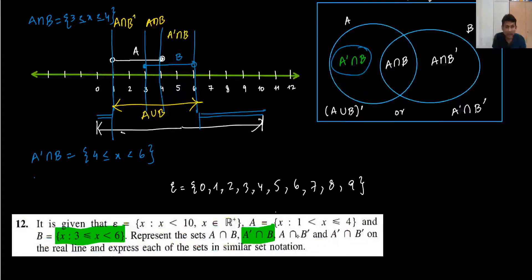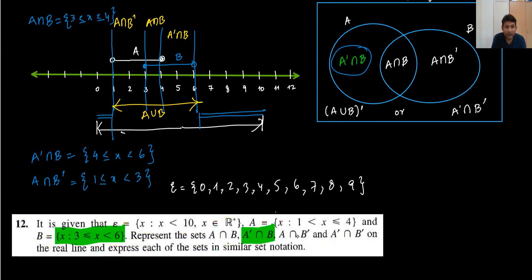Next part: A intersection B complement. This area is in A but not in B, which is from 1 to 3. At 1, we have only an open circle so 1 is not included. At 3 we have a filled circle so 3 is included. So we write 1 < X ≤ 3.